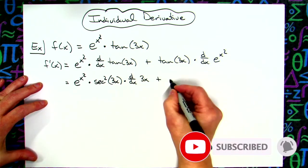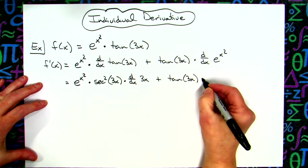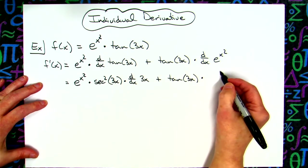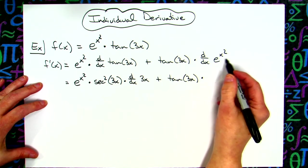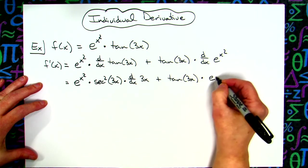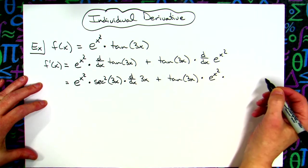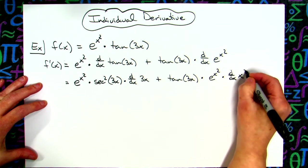We're going to leave this function alone, tangent of 3x. On this one again, the derivative of e to the u is e to the u times u prime. So we will show that here with e to the x squared, and then the u prime or the chain, taking that derivative there of the x squared.